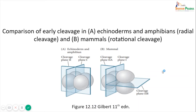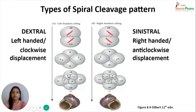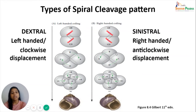This diagram shows the two types of spiral cleavage patterns. In spiral cleavage the angle of mitotic spindle is neither parallel nor perpendicular to the animal-vegetal axis but is formed at oblique angles. The resulting blastomeres are arranged in a spiral pattern. If the direction is left-handed or clockwise, the pattern is known as dextral spiral cleavage. If the spiral is right-handed or anticlockwise, it is known as sinistral spiral cleavage. This direction is also responsible for the direction of coiling in the shells of mollusks.